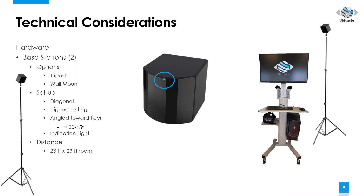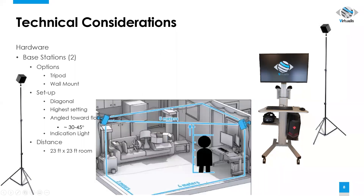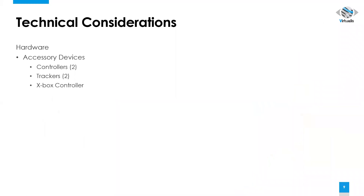Other physical considerations for setting up your system, especially these base stations, is the room size. We recommend the room be no larger than 23 by 23 feet. The room can certainly be smaller than that, but that will be the maximum distance for the base station coverage.